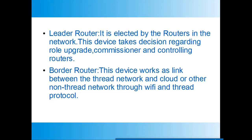Next is the Leader Router, which is elected by the routers in the Thread network. The Thread network consists of partitions, and each partition has its own leader router. This device takes decisions regarding the role and degradation of routers, maintains the router IDs, controls the commissioner, and controls the routers as well.